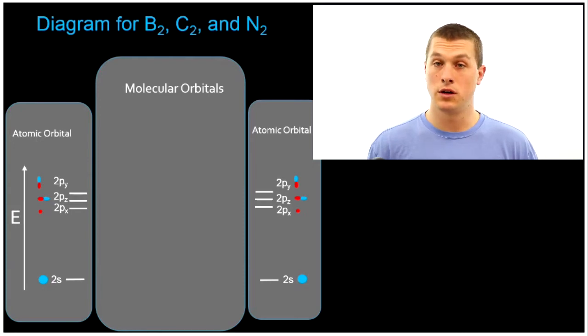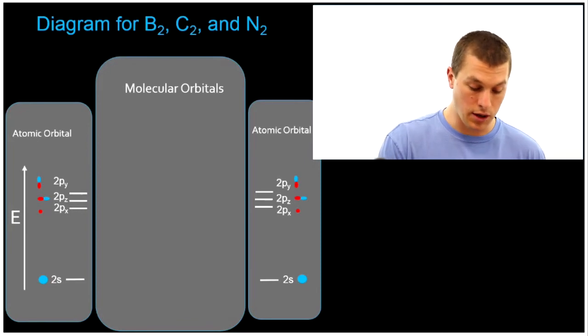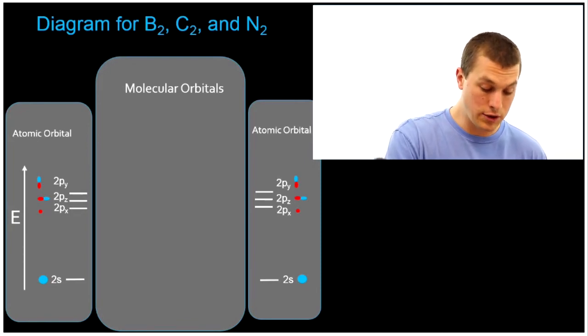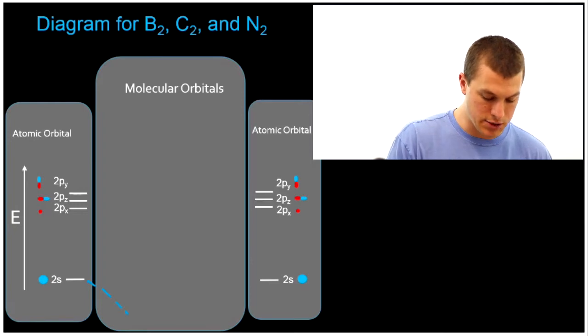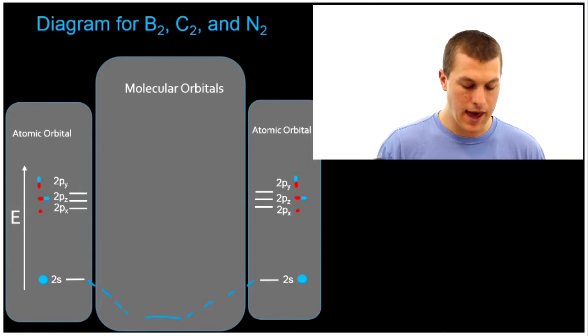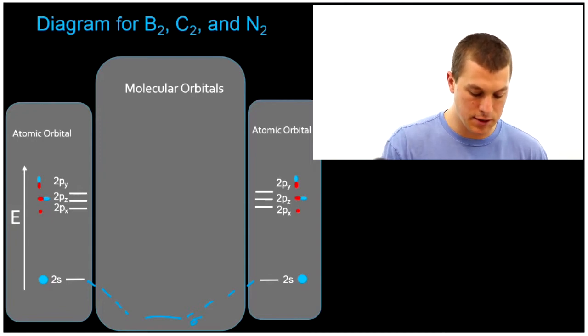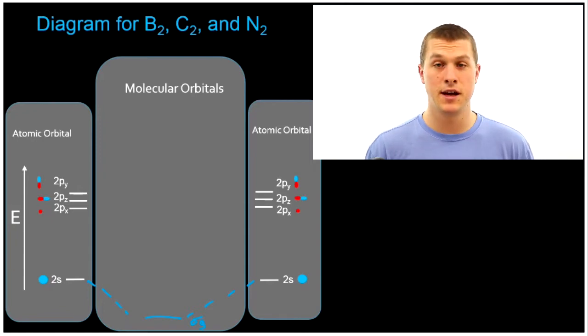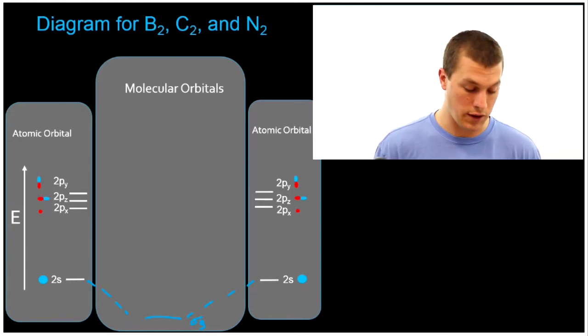What can happen when our 2s orbitals mix? Well, they can either have constructive interference between those two wave functions, which increases electron density between the protons and stabilizes the orbital. And we call that bonding, or it can do the opposite, which we'll discuss in a second. So this is bonding, when there's constructive interference between our two orbitals. And the way we label that is sigma g. And that g there stands for Gerade, which has to do with the symmetry of those two orbitals when they overlap.